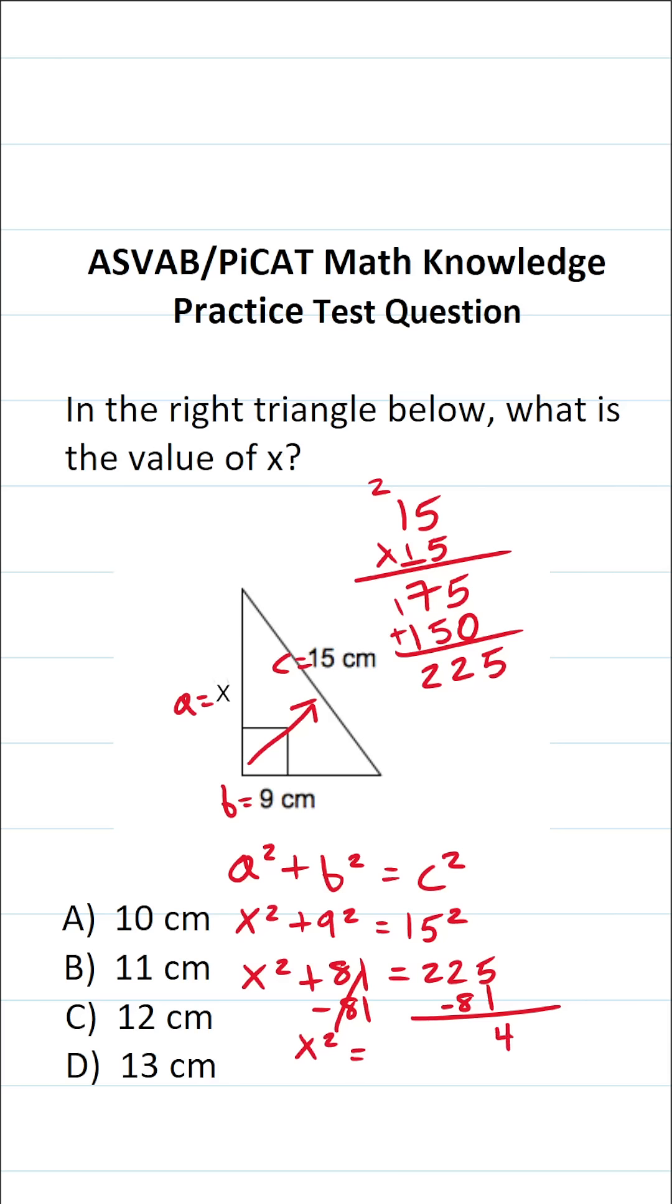5 minus 1 is 4. 2 minus 8 we can't do, so we're going to borrow. This becomes 1. This becomes 12. 12 minus 8 is 4. 1 minus nothing is 1. So this becomes x squared equals 144.